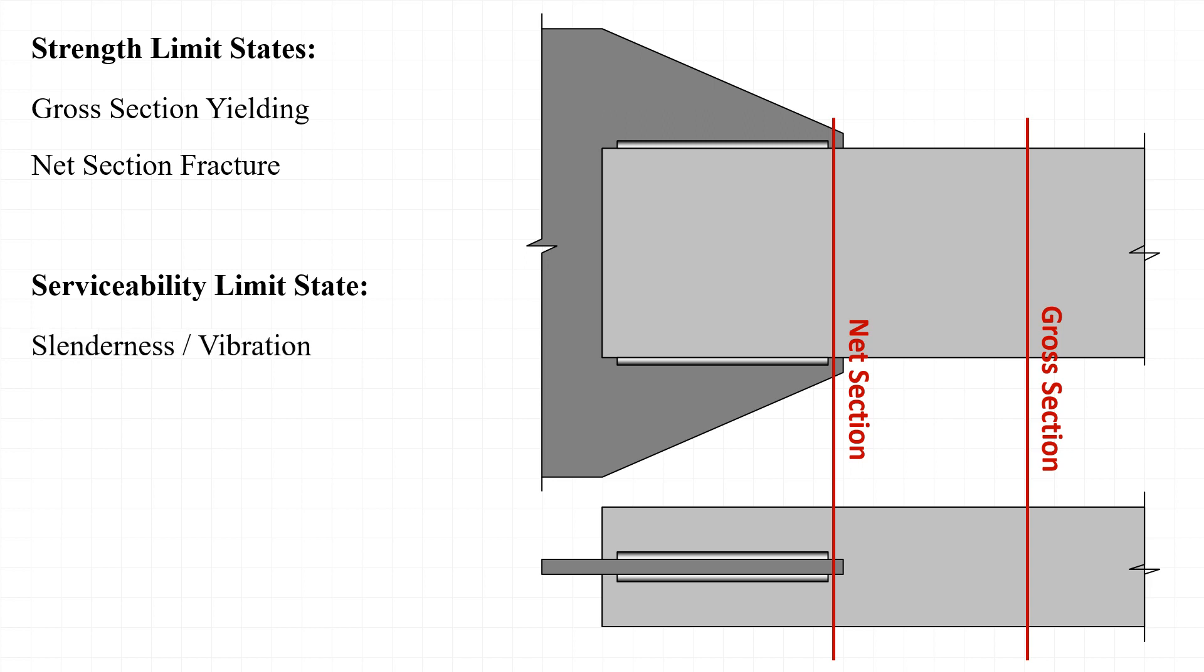Serviceability limit states should also be investigated. In this case, for a tension member, that would be slenderness or vibrations, where we make sure that L over R for the member doesn't exceed 300. In this case, frankly, the radius of gyration of an HSS member is large enough that vibrations shouldn't be a problem for any reasonably lengthed tension member.